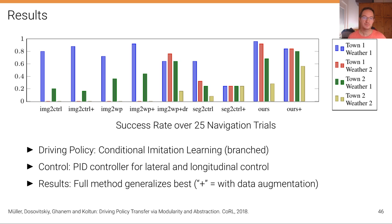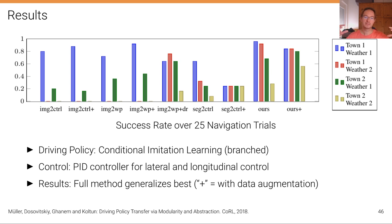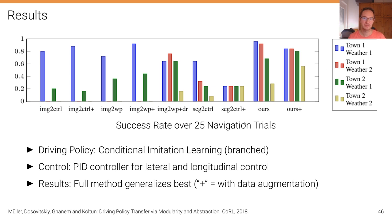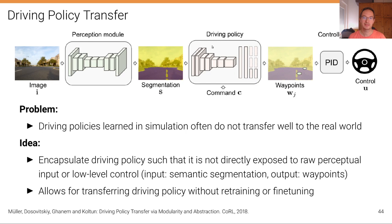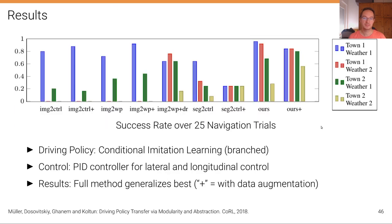The results reveal that for generalization — shown by the green and golden bars representing generalization to a new town and to a new town with new weather conditions unseen during training — the approach using the fully encapsulated, modular, and abstracted policy performs best. So it is indeed helpful to encapsulate the policy for better generalization.